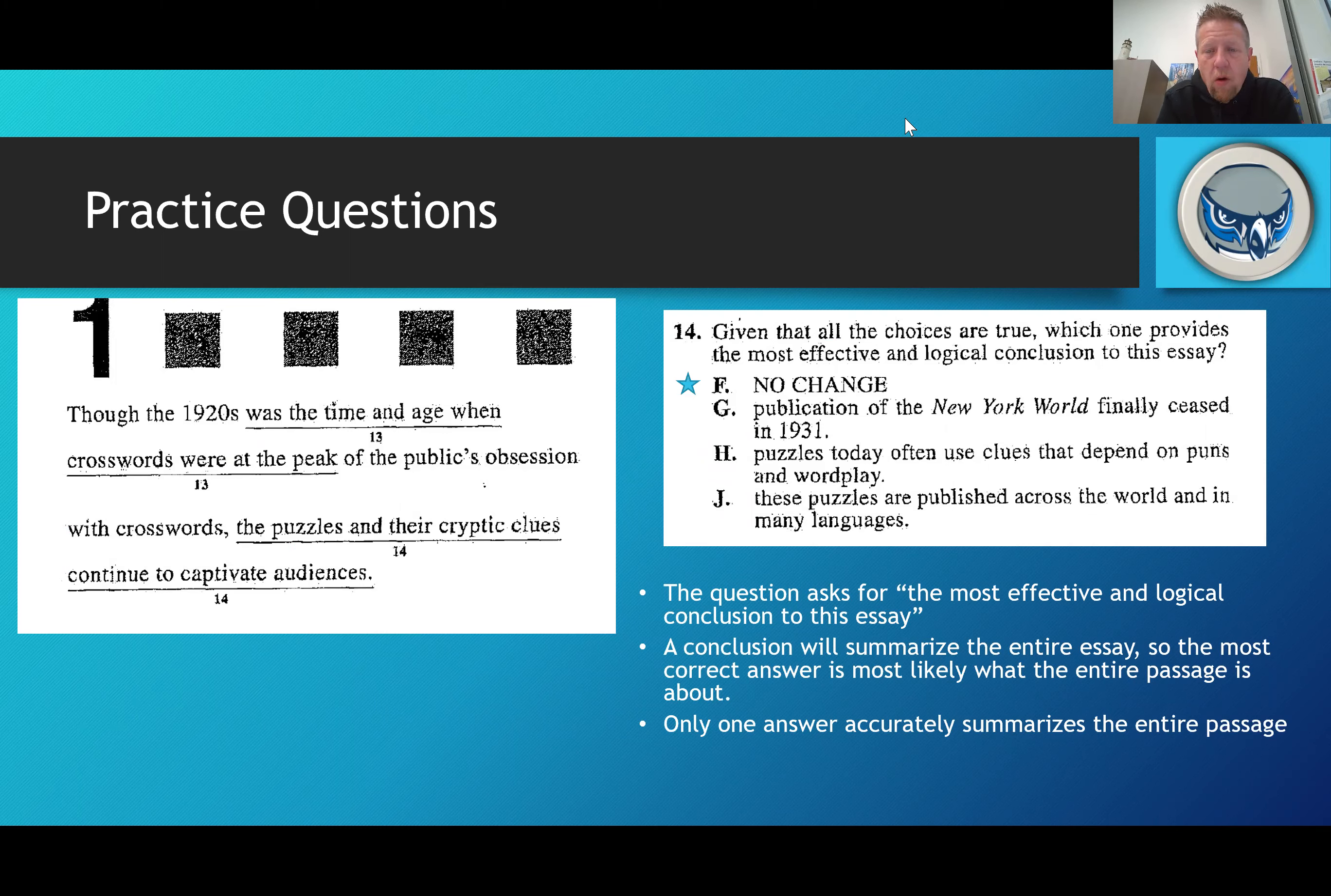The question asks, given that all the choices are true, which one provides the most effective and logical conclusion to this essay? The essay is about crosswords and number 14 says the puzzles and their cryptic clues continue to captivate audiences. That's a pretty generic and broad statement that probably captures the entirety of the passage.